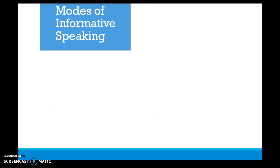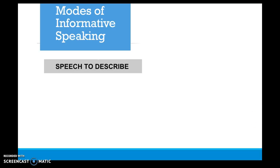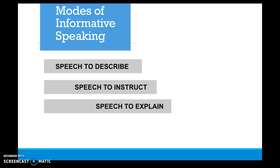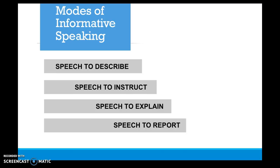So what is informative speaking? There are different modes you can choose for your informative speech in this class. You could pick a speech of description — describing an object, a person, an animal, a place, or an event. You can instruct about a process, also called a demonstration speech. You can explain a concept or issue, or you can report on different findings.